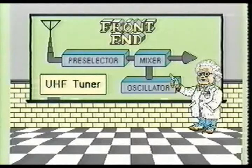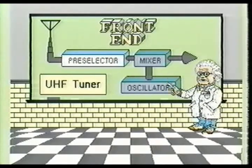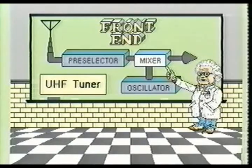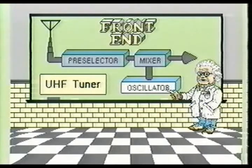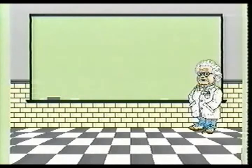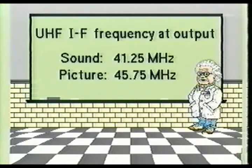The UHF tuner consists of three primary sections: the preselector, mixer, and the UHF oscillator sections. The preselector portion is used to select the desired channel, block out all unwanted channel frequencies, and isolate the oscillator section from the antenna. The mixer portion is responsible for combining the selected RF signals with the signal produced by the UHF oscillator section. The oscillator section is designed to operate at a frequency higher than the incoming RF signal by an amount equal to the IF frequency values. The IF values at the output of the mixer section will be 45.75 MHz for the picture carrier and 41.25 MHz for the sound carrier, regardless of the frequency of the selected channel.